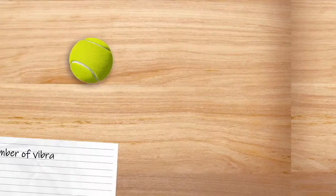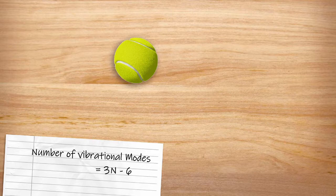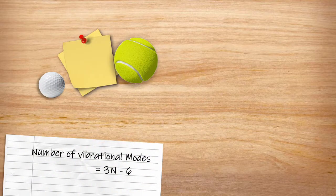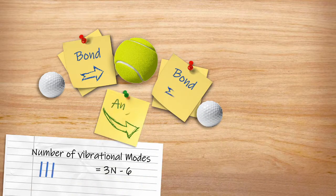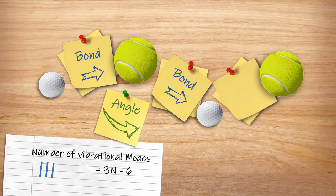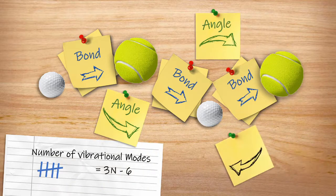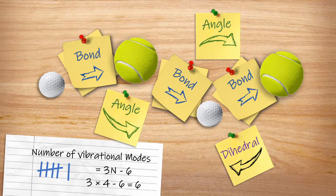Another way to justify the number of vibrations is to build up to it. A lone atom cannot vibrate. A pair of atoms has only one additional coordinate, the bond length between them. A third atom adds a new bond length and also an angle that can change, so there must be three distinct vibrational modes. A fourth atom adds another bond length, another angle, and then a torsional or dihedral angle, which makes six. Each additional atom will add three degrees of freedom and therefore three new vibrational modes.